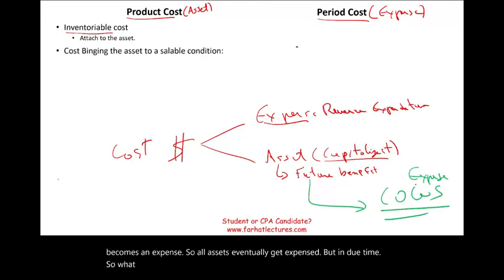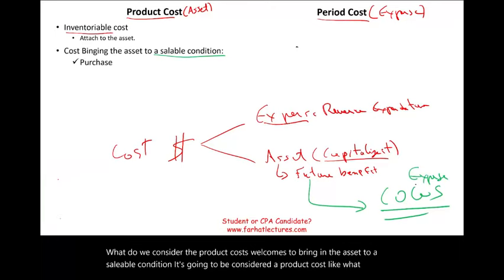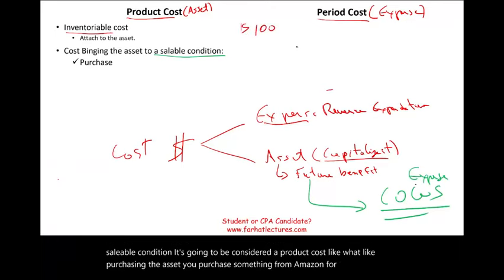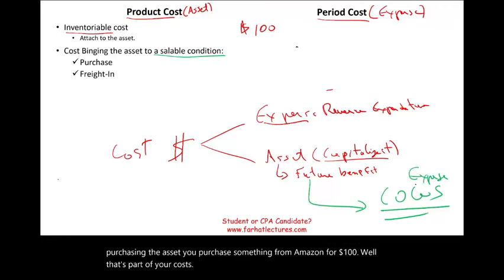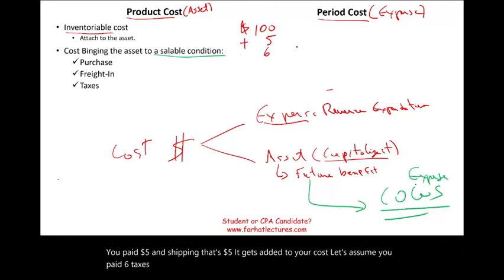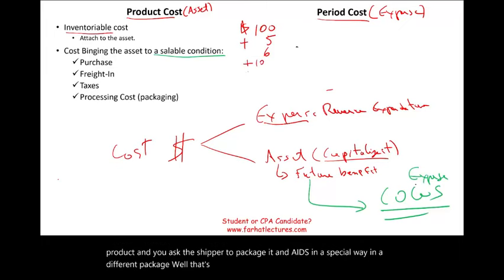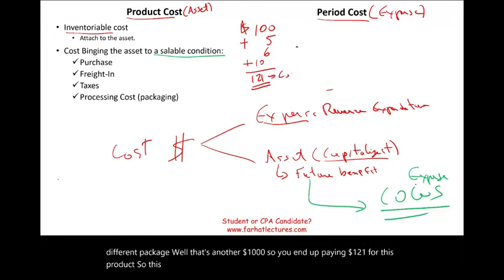What do we consider product costs? Any cost to bring an asset to a saleable condition is considered a product cost. For example, if you purchase something from Amazon for $100, pay $5 in shipping and $6 in taxes, that's $111. If you also need special packaging for another $10, you end up paying $121 for this product. That full $121 is the cost of your inventory — it's considered an asset.